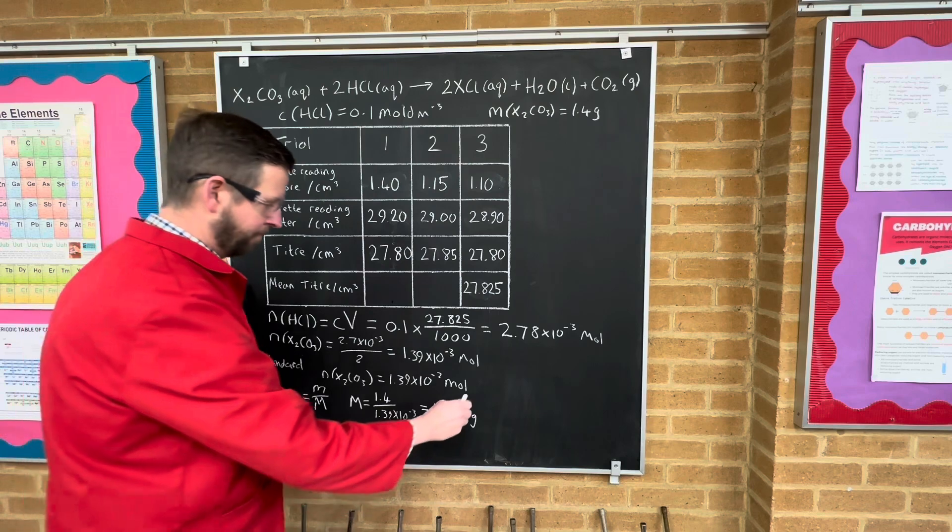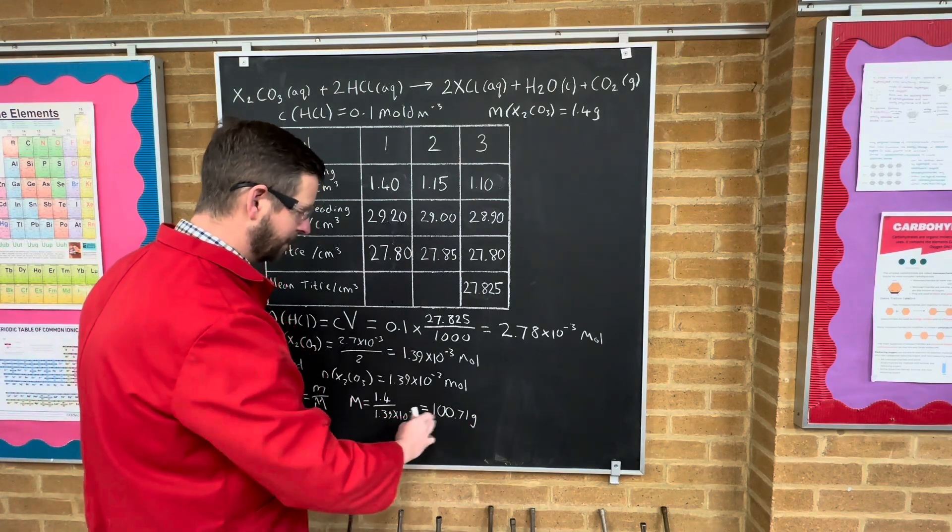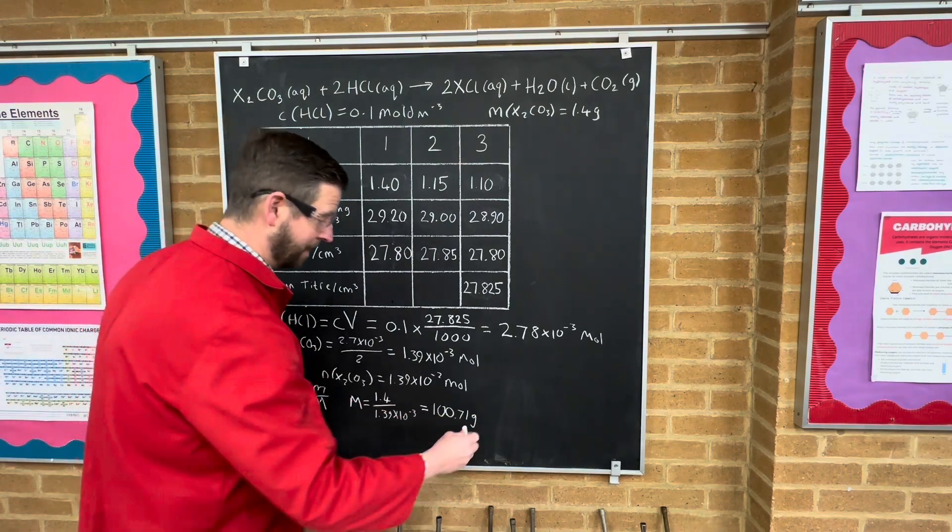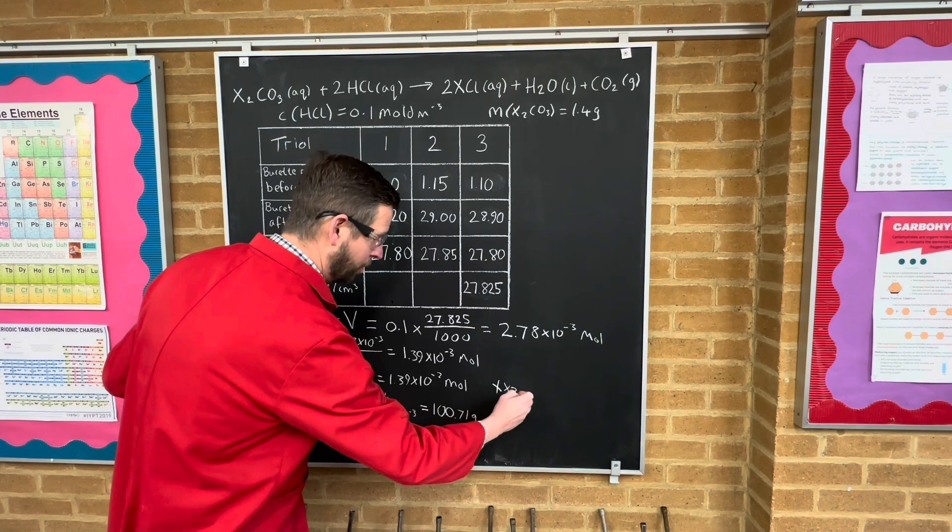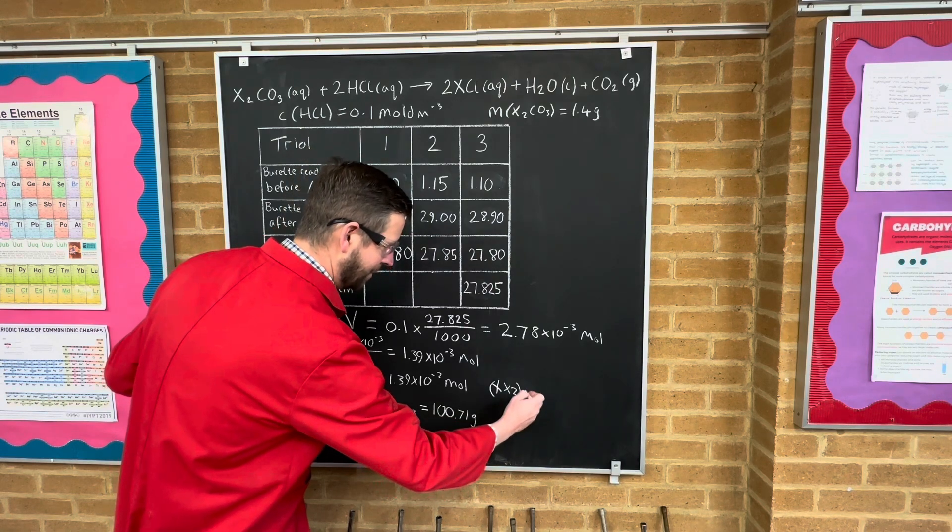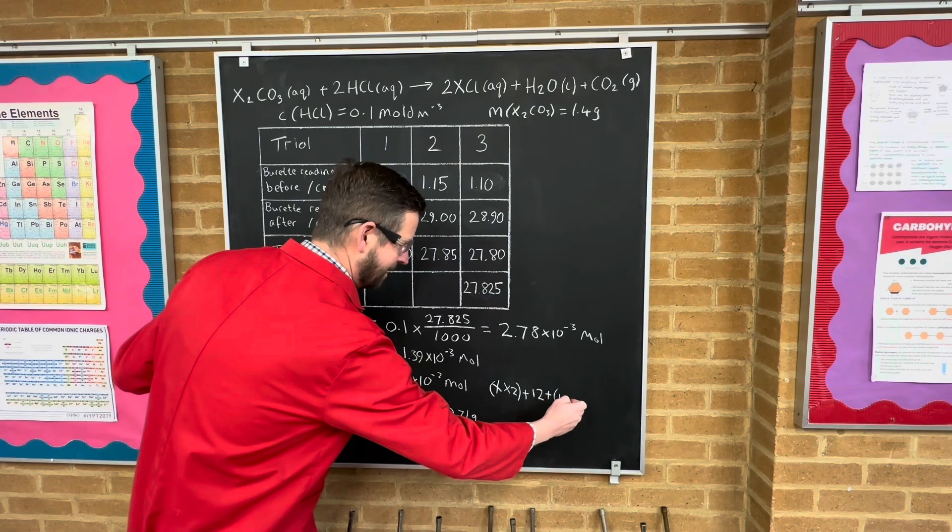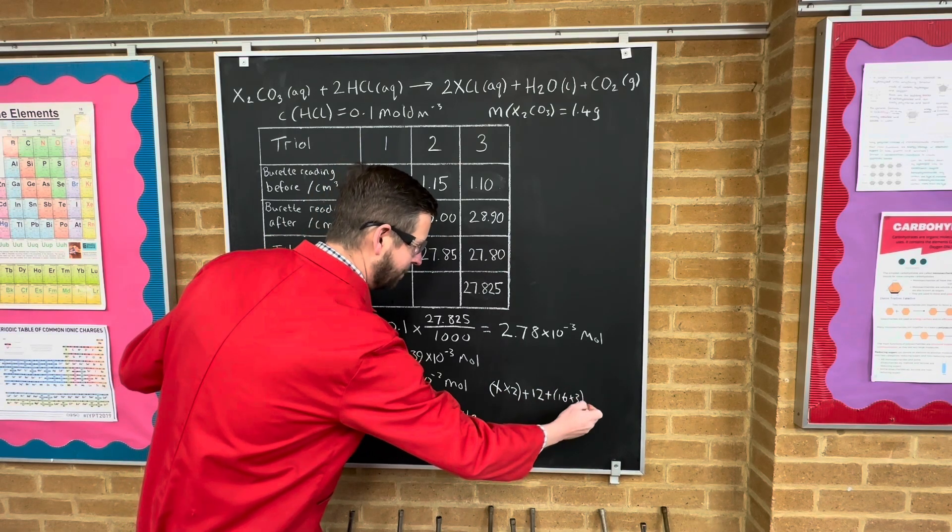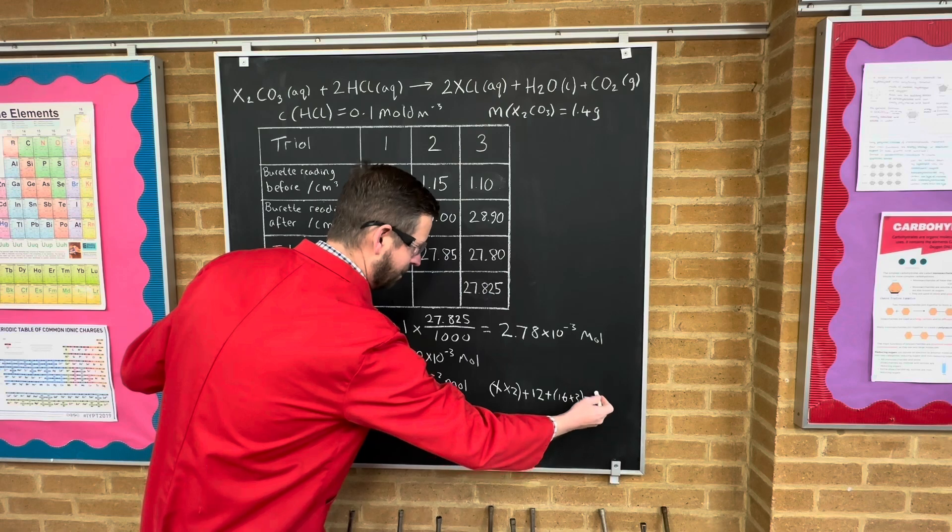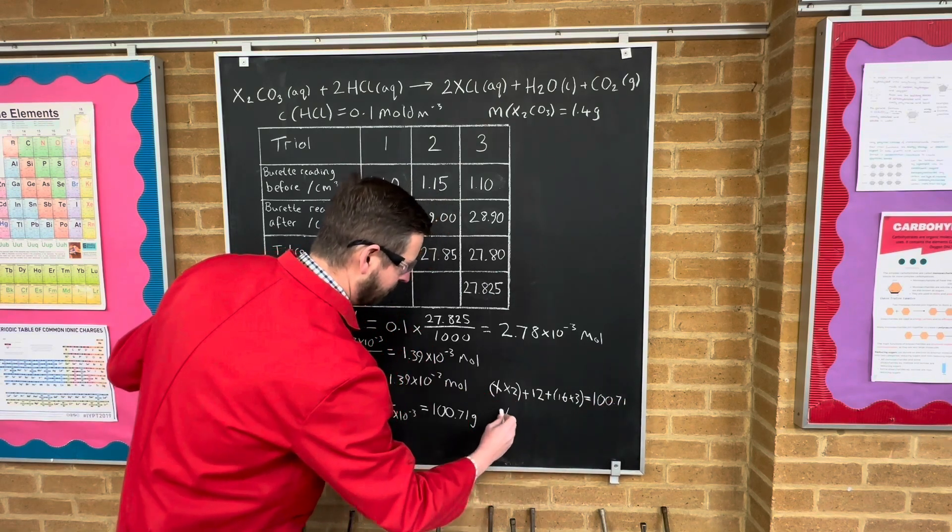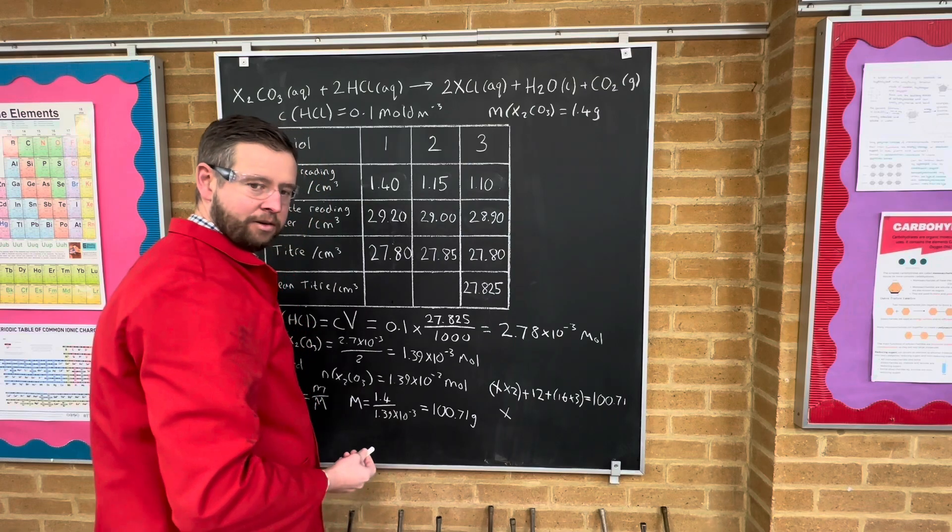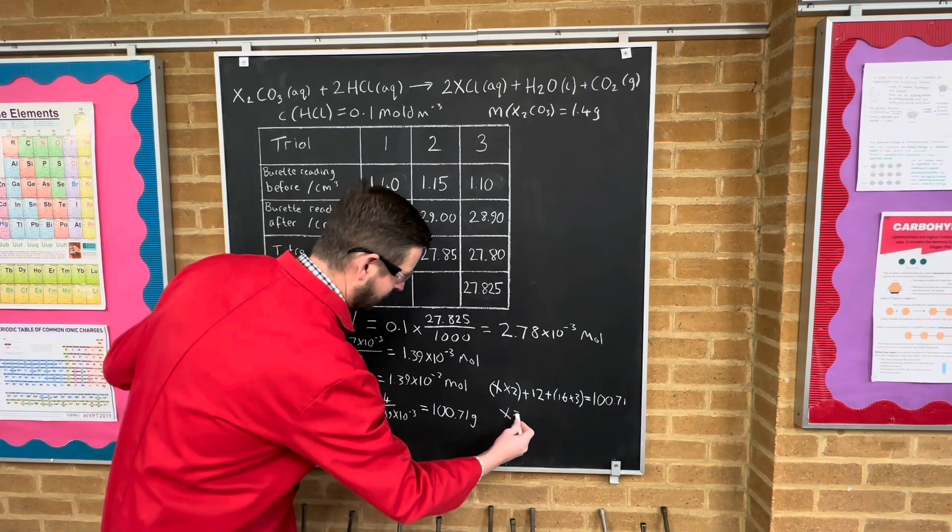Now when we consider that if that is the total molar mass of this entire carbonate, our carbonate's mass is X times 2, because we don't know that, plus 12 of the carbon, plus 16 times 3. If that is equal to 100.71, then X is going to equal 30, give or take.